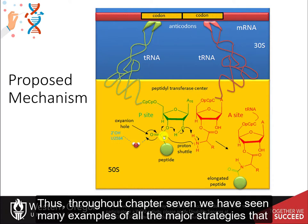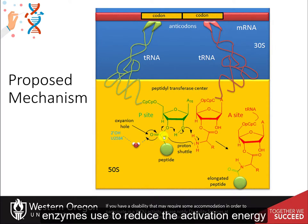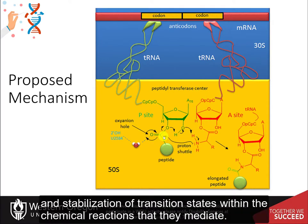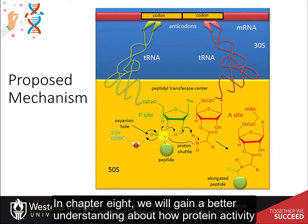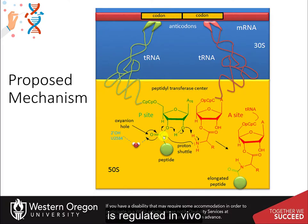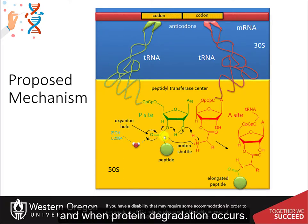Throughout Chapter 7, we have seen many examples of all the major strategies that enzymes use to reduce the activation energy and stabilization of transition states within the chemical reactions that they mediate. In Chapter 8, we will gain a better understanding about how protein activity is regulated in vivo and when protein degradation occurs.